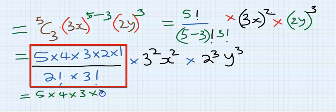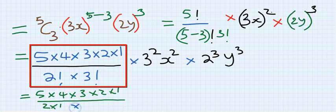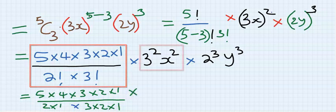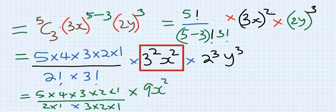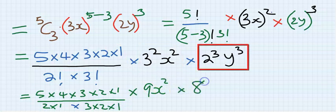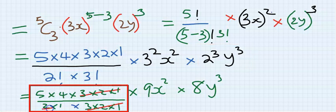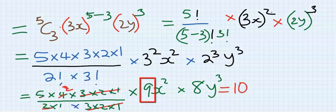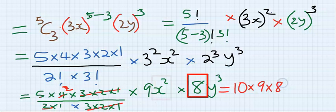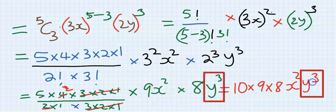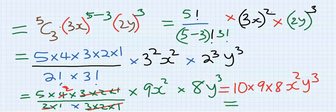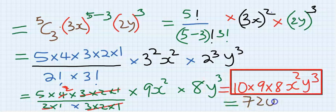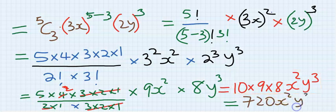Solving: 5 times 4 times 3 times 2 times 1 divided by (2 times 1) times (3 times 2 times 1), multiplied by 9x² times 8y³. This gives 10 times 9 times 8 times x²y³. Breaking it down, you get 720x²y³.